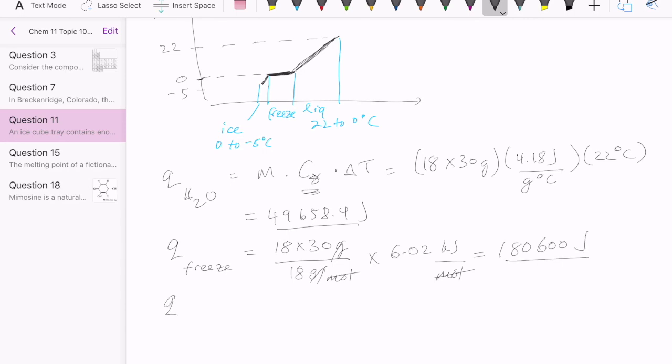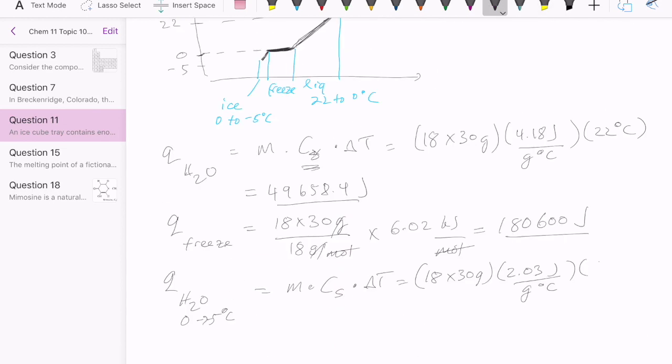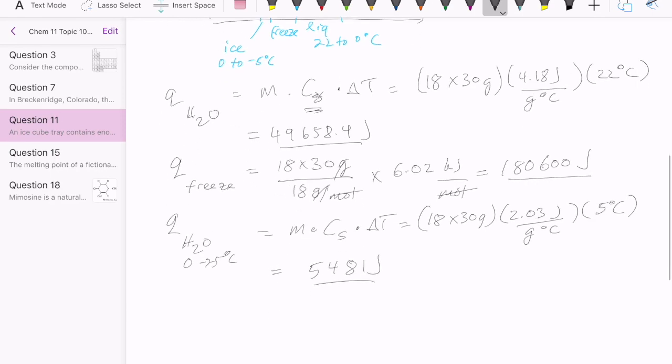And then the third process is taking the water from zero to negative 5 degrees Celsius. And we would use MC delta T again, except now we would use the specific heat of ice, not liquid water. And the specific heat of ice is 2.03. And then the temperature difference is 5 degrees Celsius. Calculating this gives us 5,481 joules.